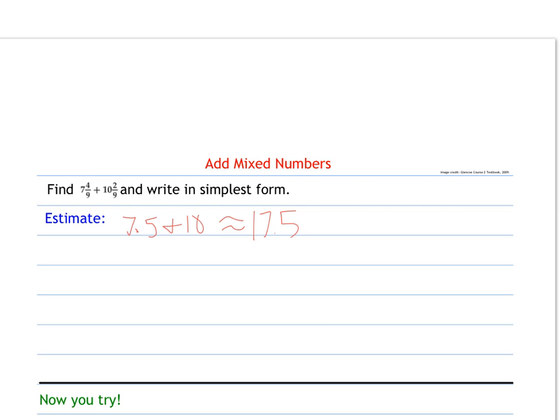To add them, some people like to line them up horizontally. For some of you, it might be helpful to line them up vertically. Because then you can see I need to add my numerator, since I already have a common denominator. So when I get 6, keep my denominator the same as 9. Add my whole numbers 7 and 10 for 17.